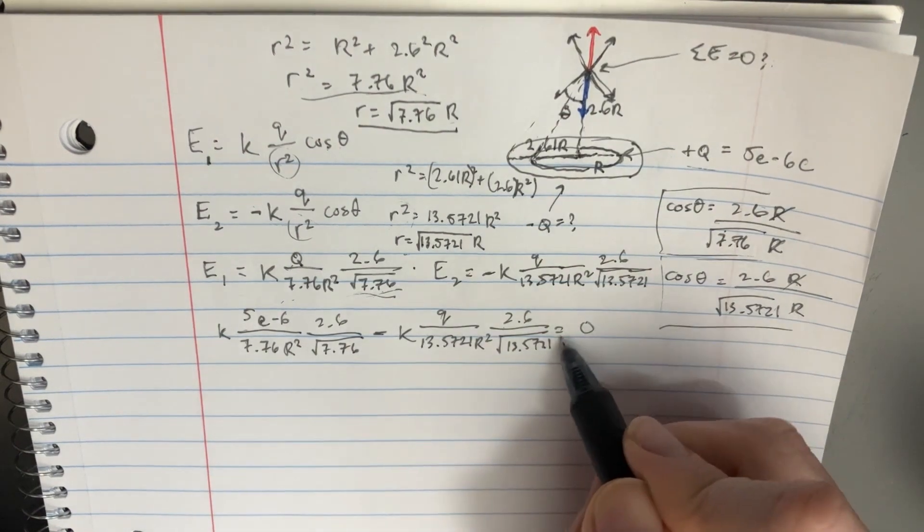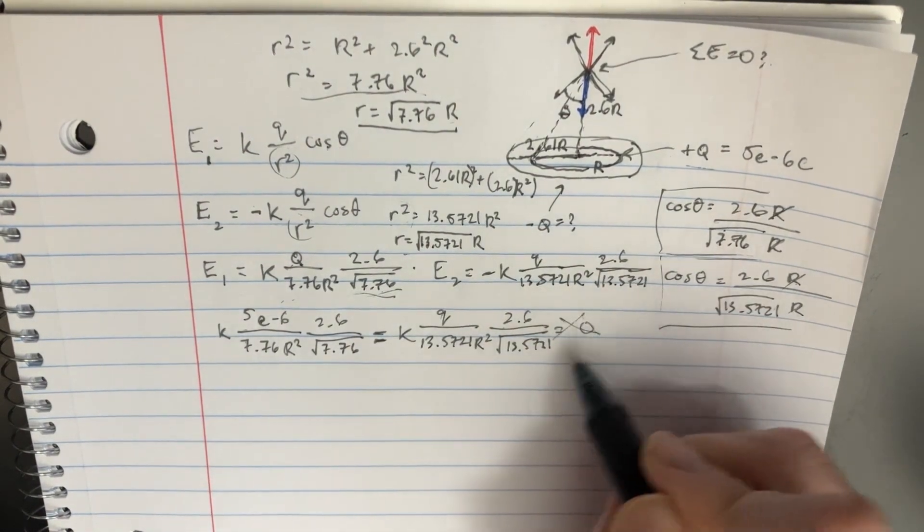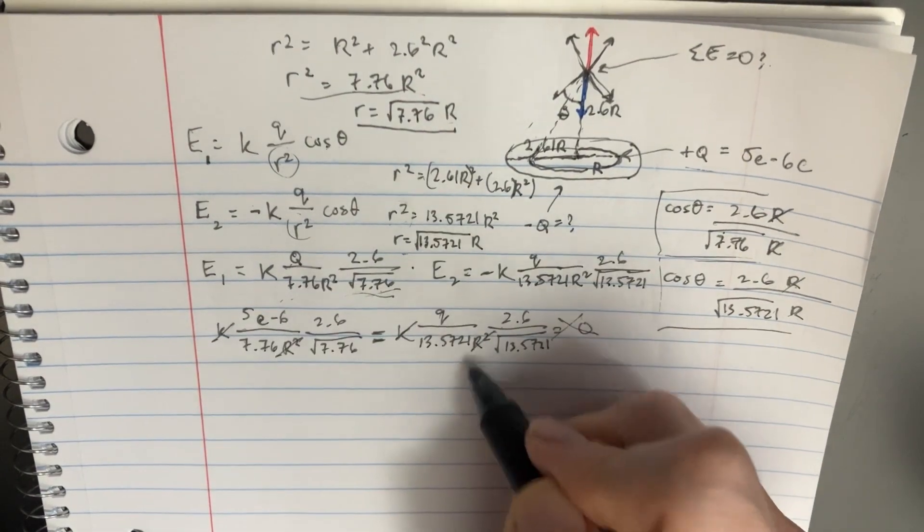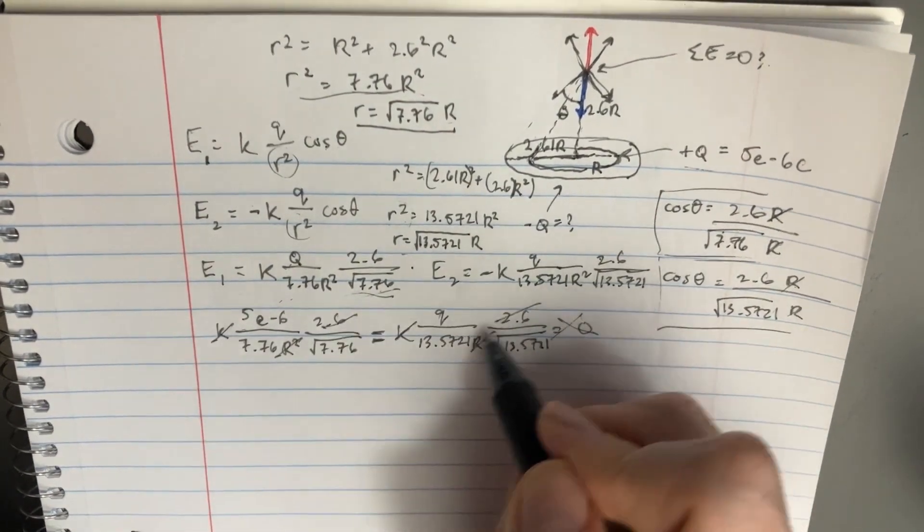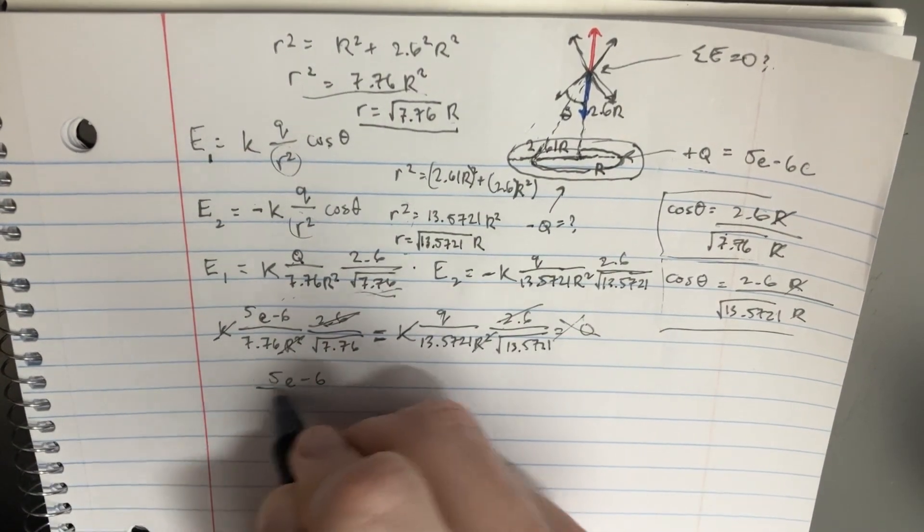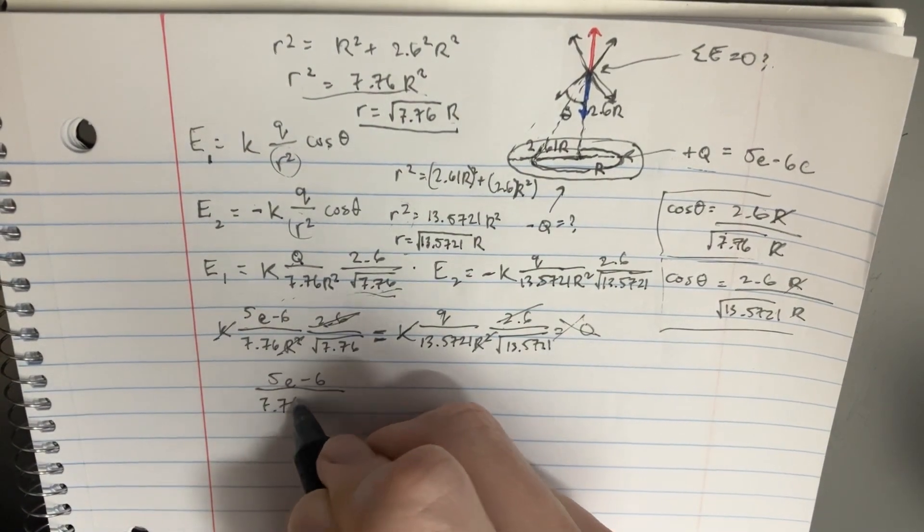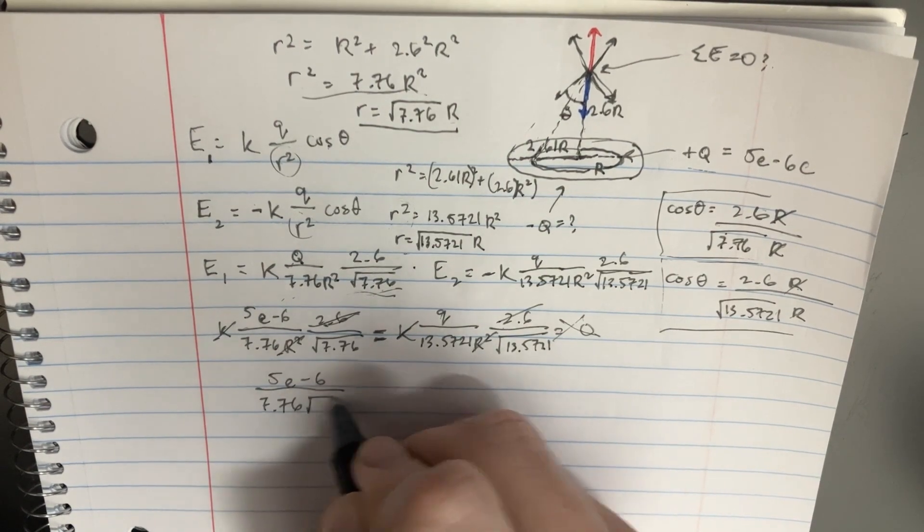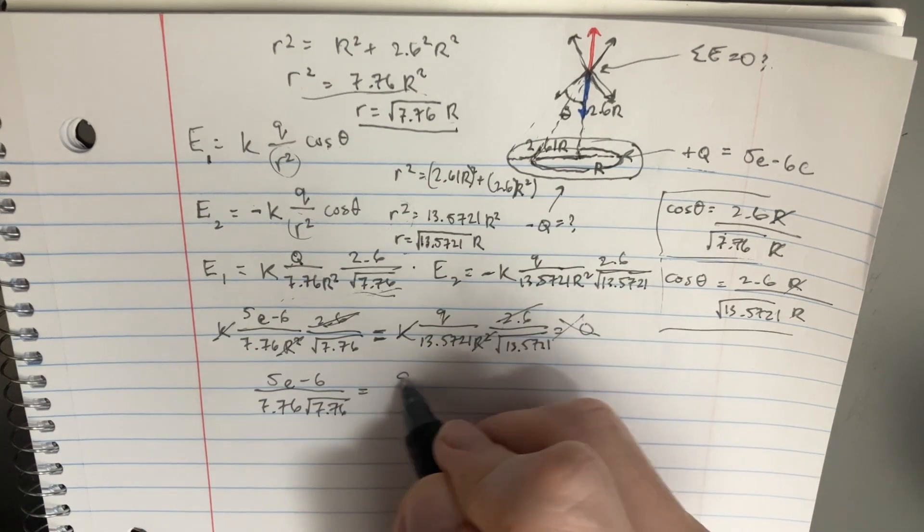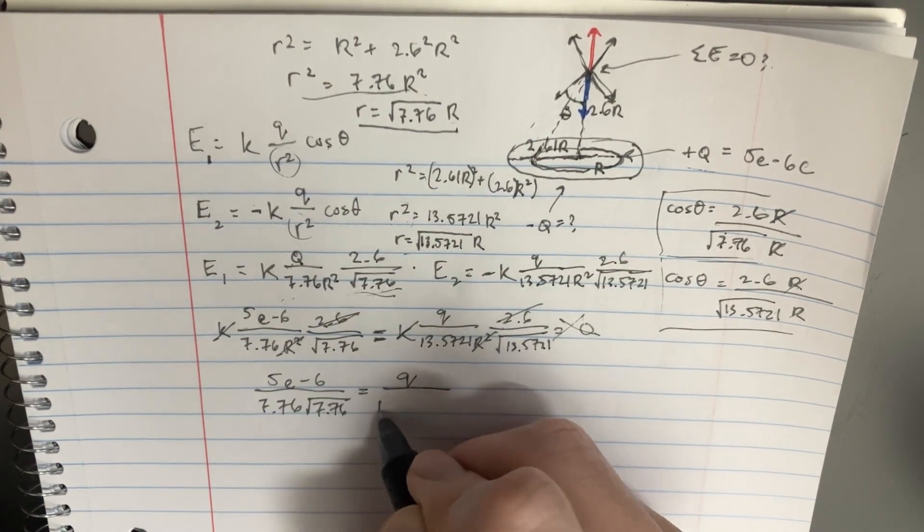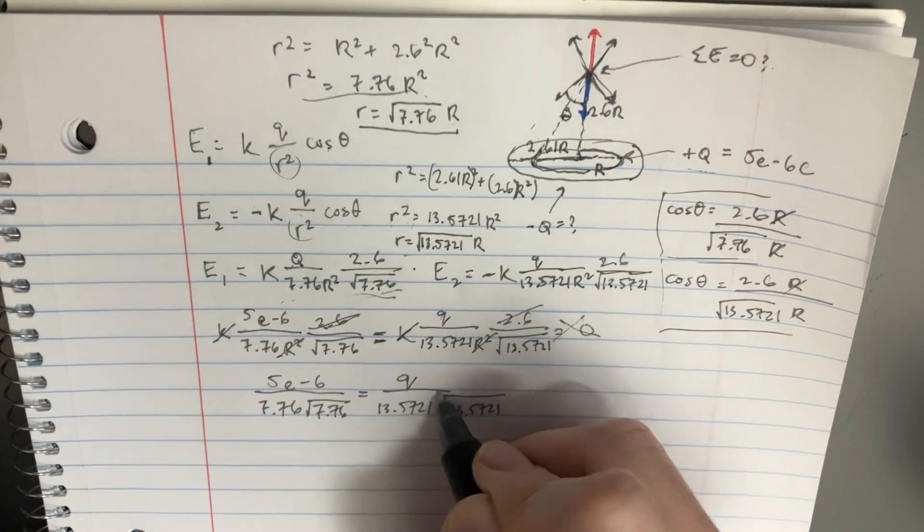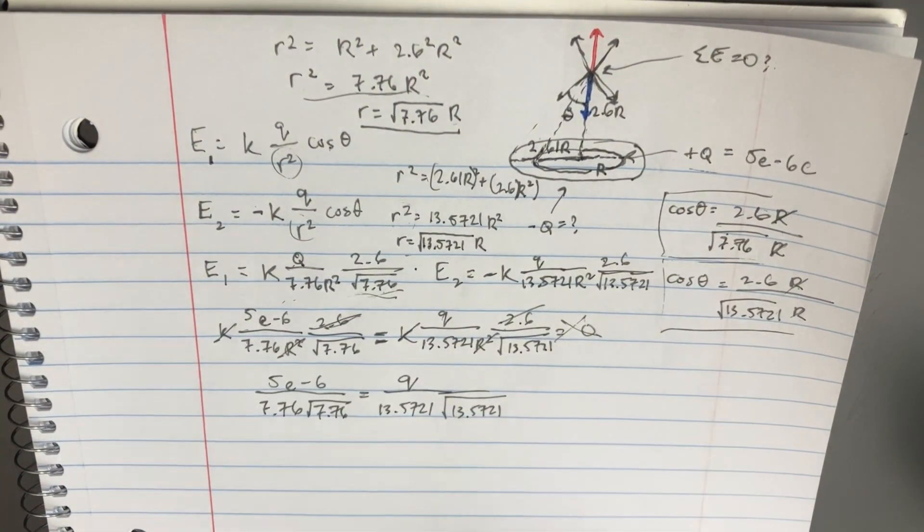So if these two things, if we rearrange this equation maybe like that, then we can say, okay, maybe the k's will cancel, the r's will cancel, the 2.6's are even going to cancel, and we're left with 5e to the negative 6 divided by 7.76 square root of 7.76, equals q over 13.5721 square root of 13.5721. And now we can just kind of solve for q real quick.